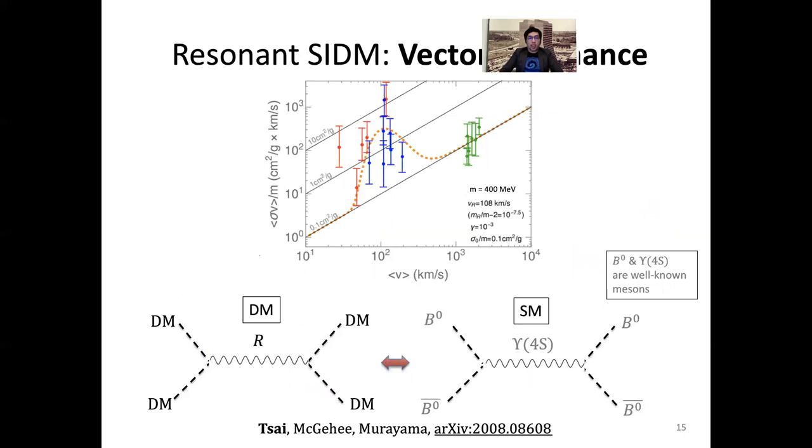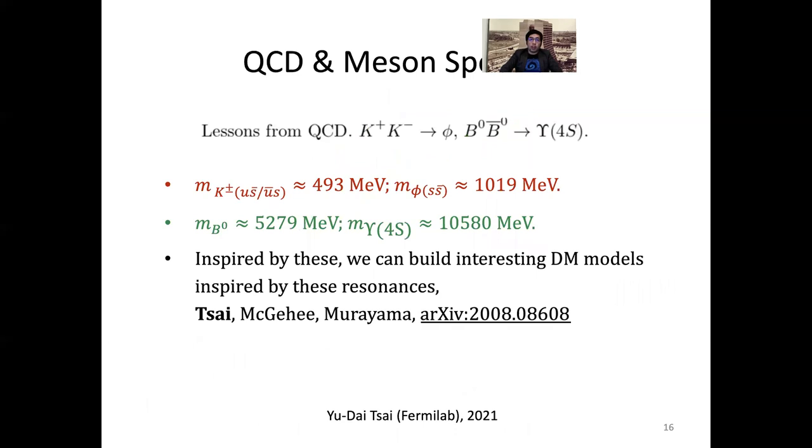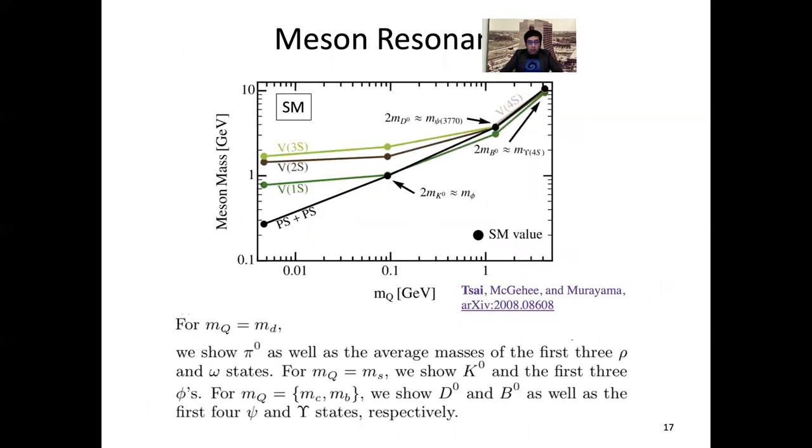You can think about what's happening in the standard model could be similar to what's happening in the dark matter sector. In standard model, we know that B0 and B0-bar can have this kind of resonance to Upsilon(4S). Upsilon(4S) can decay through a lot of different stuff, but it can dominantly decay to B0 and B0-bar. We will model our dark sector based on this kind of physics. If you look into it, you find there's a lot of resonance. K+ K- can go to phi ss-bar. For the mesonic sector, there's many, many resonances, and we can understand it.